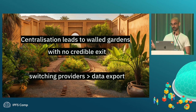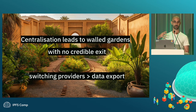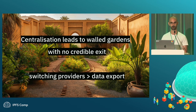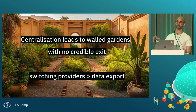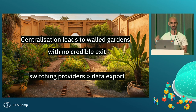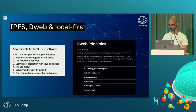Centralization leads to walled gardens that provide no credible exit. A lot of platforms have started providing, thanks to legislation, a way to take away your data. But the problem with data exports is that while you might take your data, all the value you get from something like Facebook or Twitter is your social graph — you can't really act on those connections. A good alternate example is Bluesky, where you can take away all your connections and maintain those relationships even if you change your PDS — your personal data server.